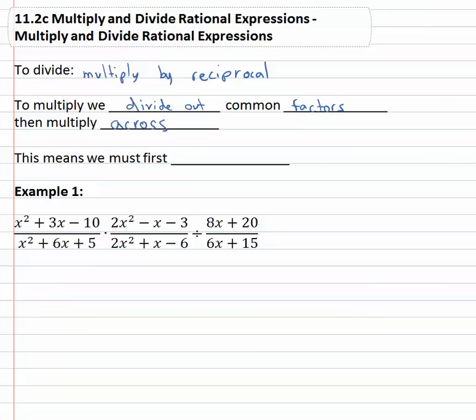Which means in order to divide out common factors we also know we must first find the factors. So when we look at a problem like x squared plus 3x minus ten over x squared plus 6x plus five times 2x squared minus x minus three all over 2x squared plus x minus six, divided by 8x plus 20 over 6x plus 15, we start by getting rid of the division.